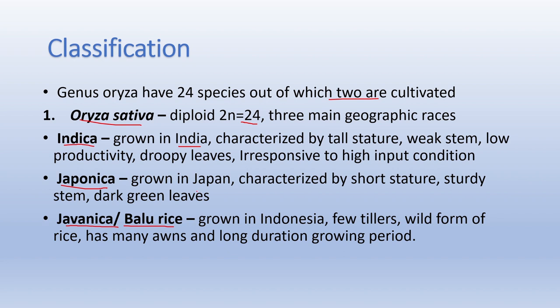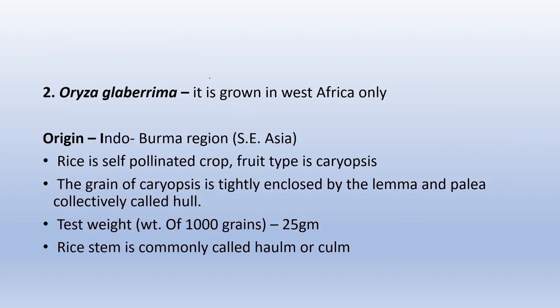Japonica is grown in Japan. It is characterized by short stature, sturdy stem, dark green leaves, and is responsive to intensive input conditions, having the highest productivity. Grain shape is oval to round. Javanica, also called bulu rice, is grown in Indonesia. It has few tillers, is a wild form of rice, has many awns, and a long duration growing period. The second species, Oryza glaberrima, is grown in West Africa only.